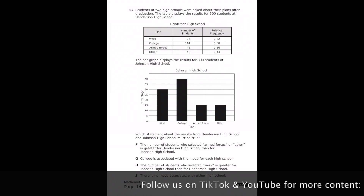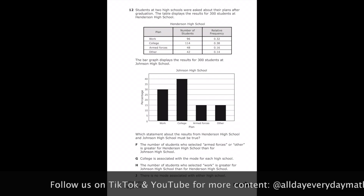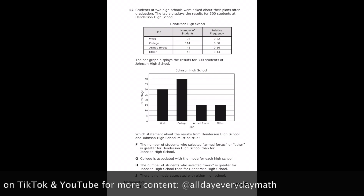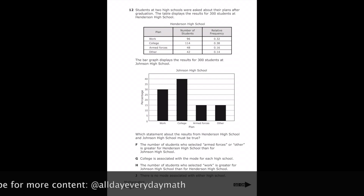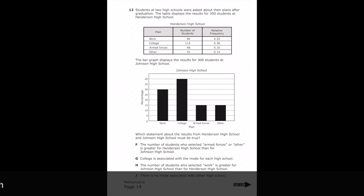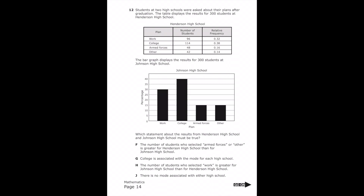Number 12: students at two high schools were asked about their plans after graduation. The table displays results for 300 students at Henderson High School, and the bar graph displays results for 300 students at Johnson High School. The table for Henderson shows relative frequency, which is the same as percentage, and the bar graph for Johnson also shows percentage, so we can easily compare these two schools.